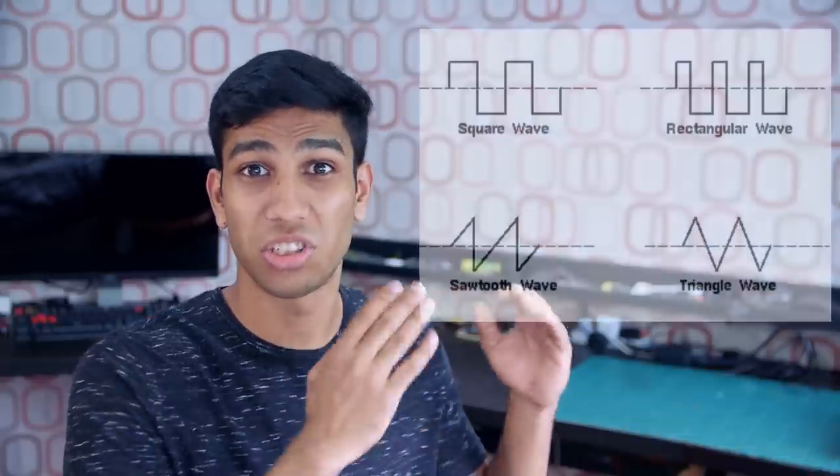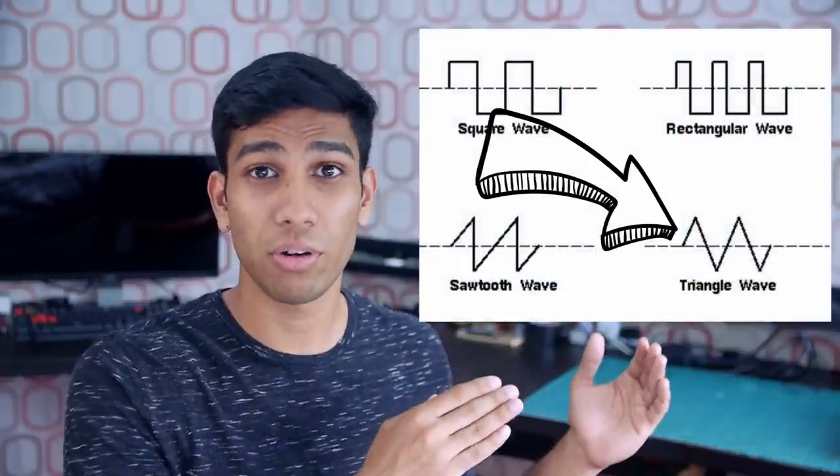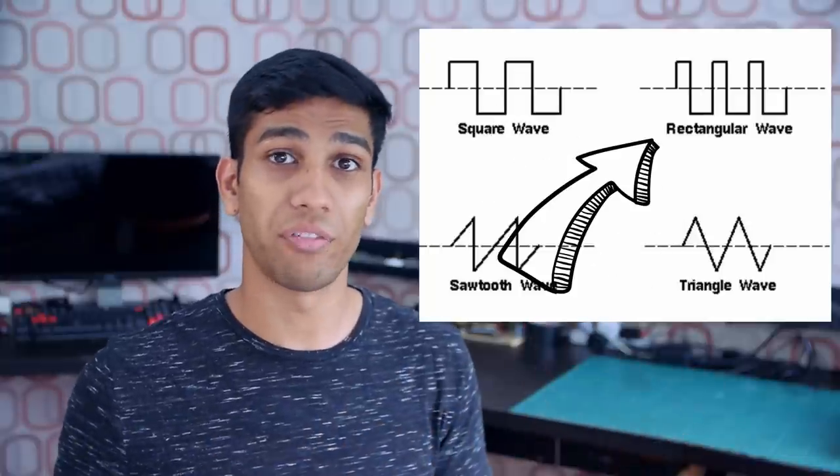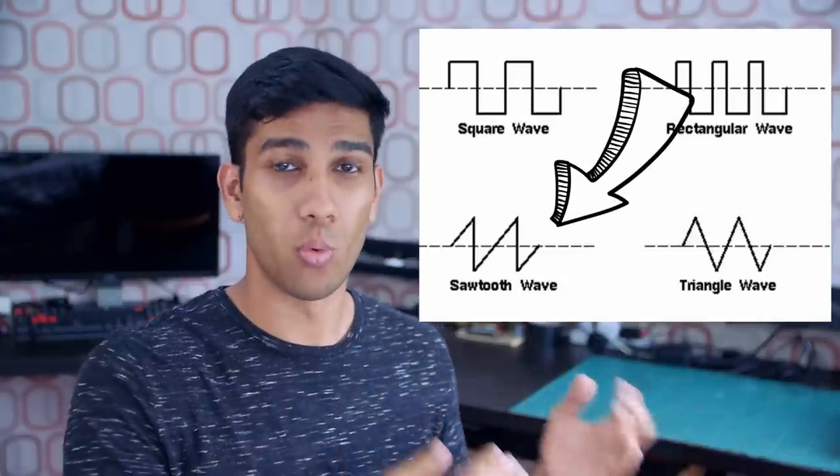Now there are also non-sinusoidal oscillators, also known as relaxation oscillators. These create waves that look like triangular waveforms, square or rectangular waveforms, or even saw-tooth waveforms. Such oscillators typically have frequencies ranging from 0 Hz all the way up to 20 MHz.